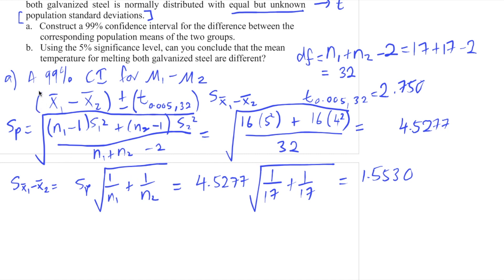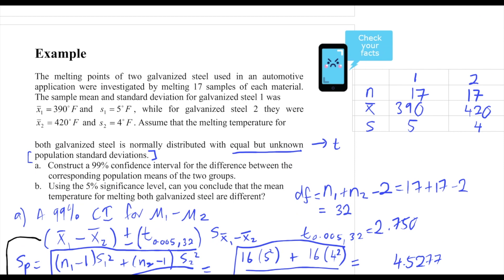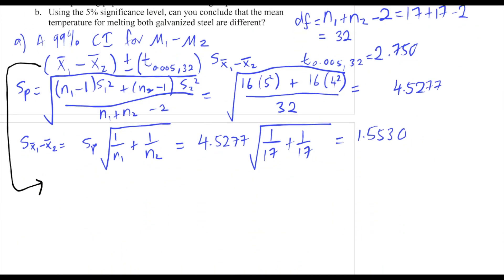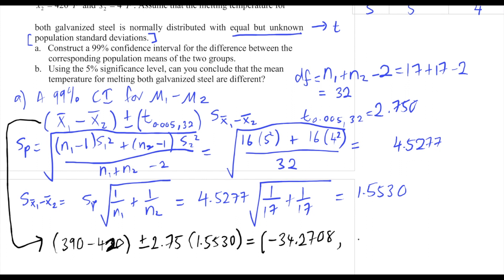The 99% confidence interval is: (390 − 420) ± 2.750 × 1.5530, which gives −30 ± 4.2707. So our confidence interval is (−34.2708, −25.7293).